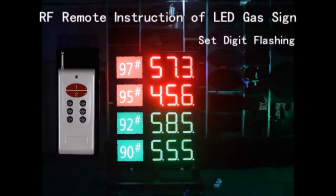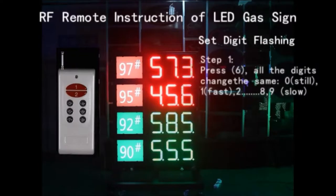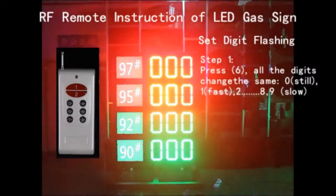New function of all the digits flashing. Step 1. Press button 6, all the digits change the same. 0 means the speed is still on. 1 means fast.